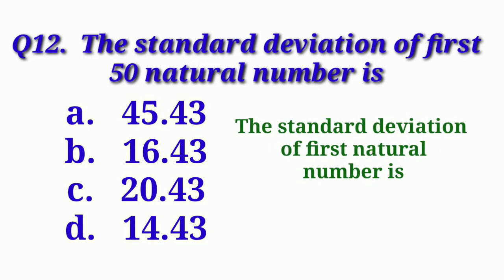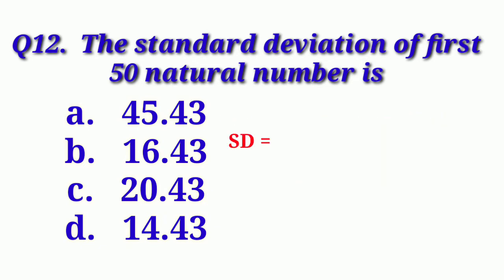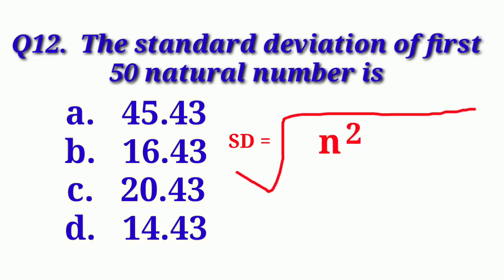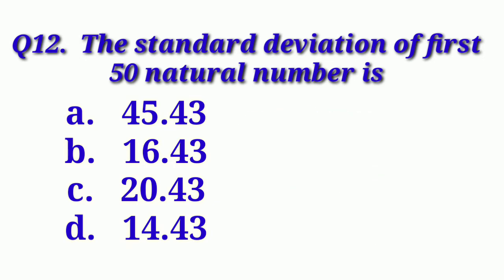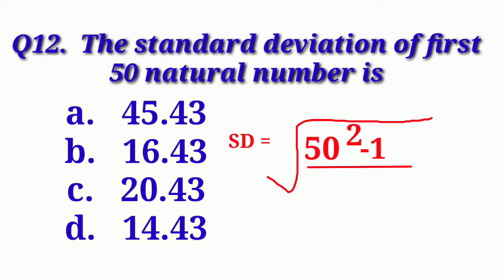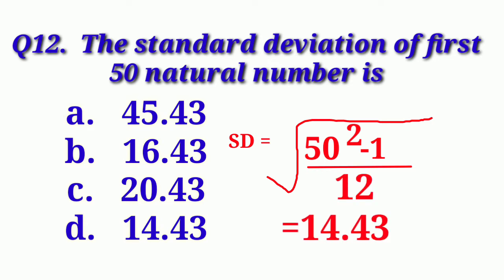Putting in the value: SD = √((50² − 1) / 12) = 14.43. So our correct option is Option D: 14.43.